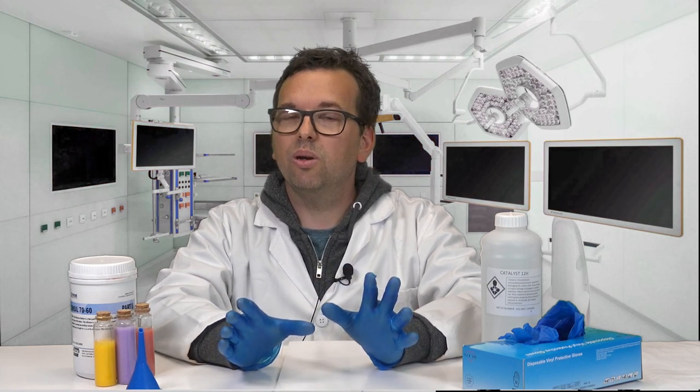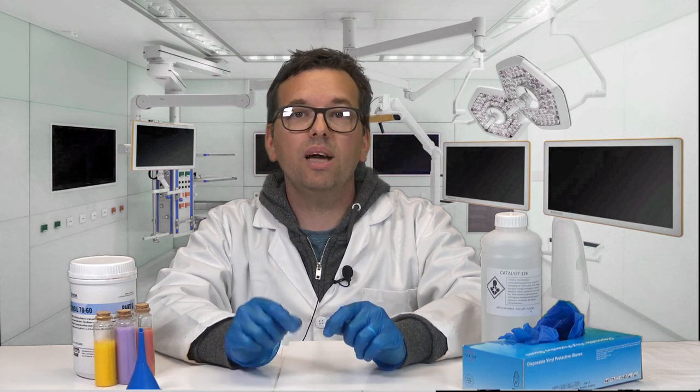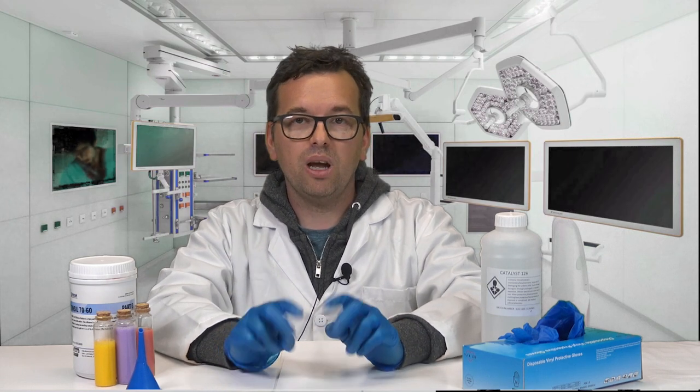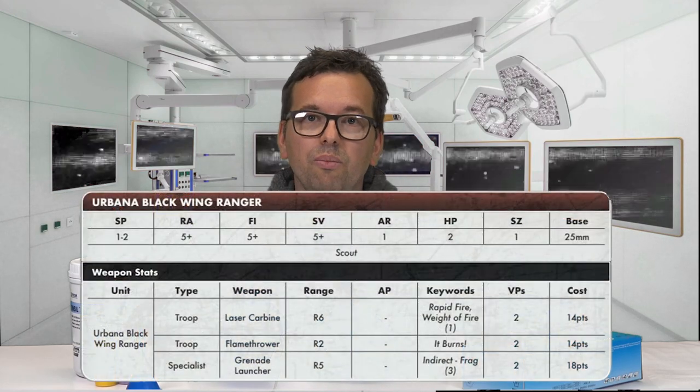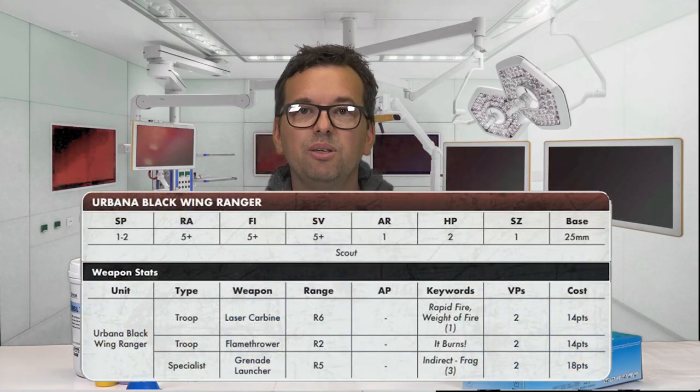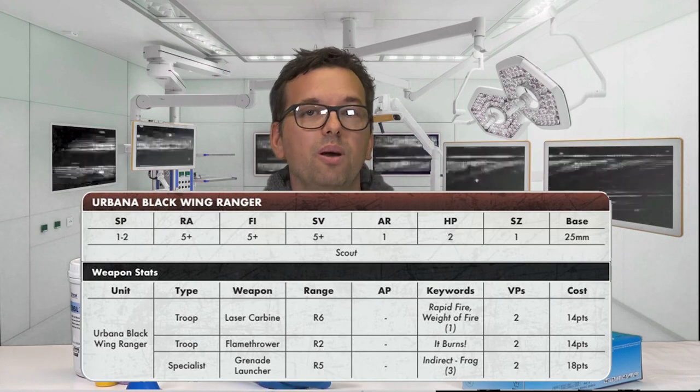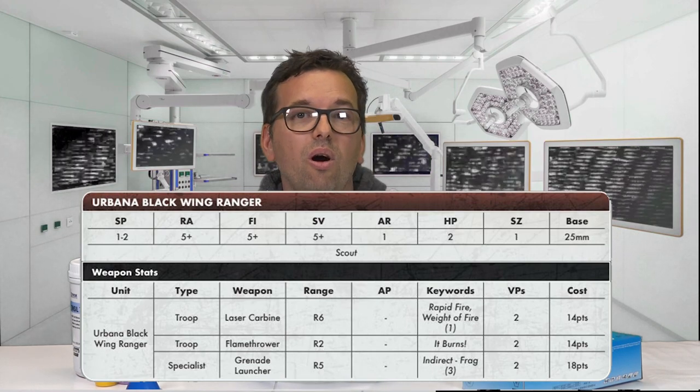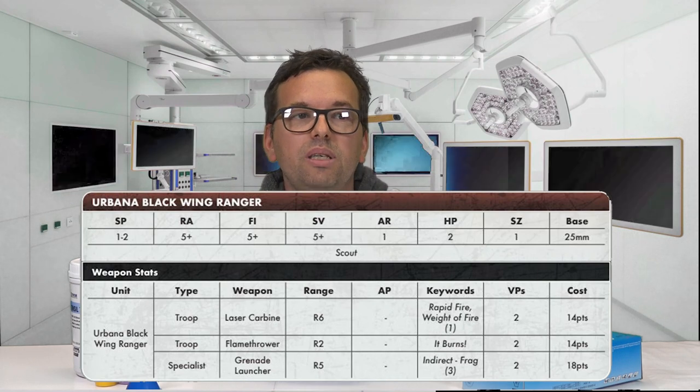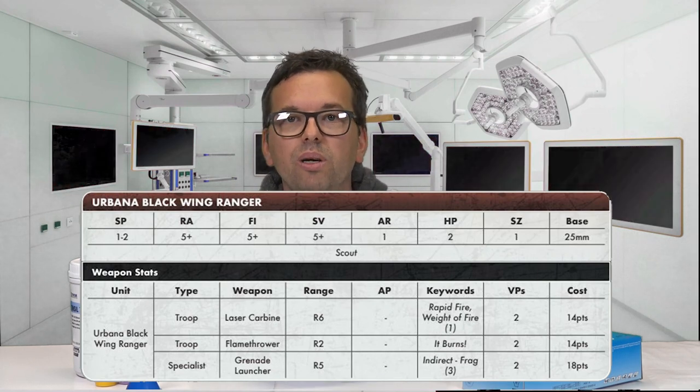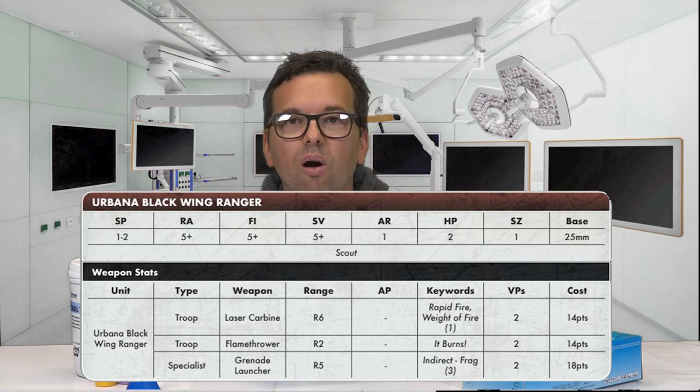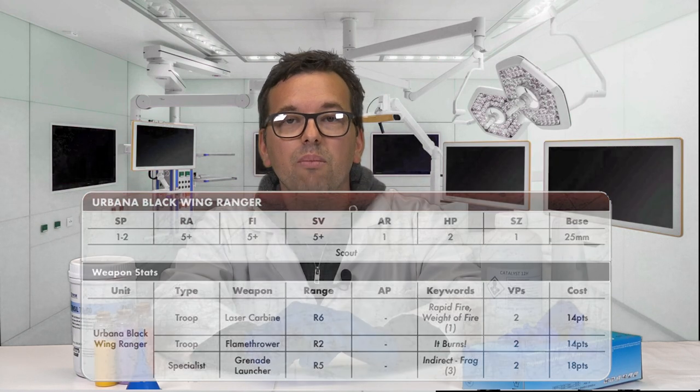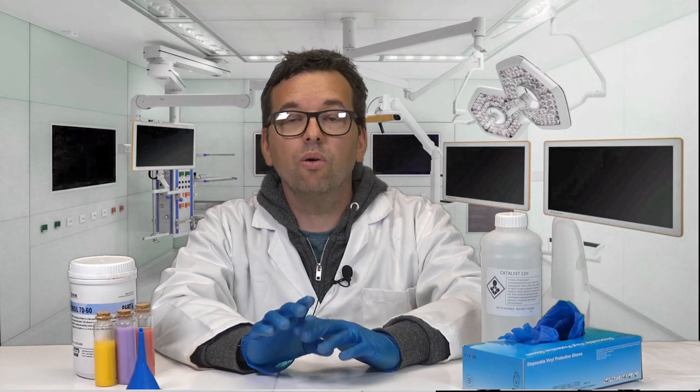I think one thing that may catch people unaware is Meson Labs are surprisingly fast too. The Rangers have scout, which means you can deploy them and then move them up slightly closer to your enemy. So you're putting pressure on the enemy from turn one, particularly when you've got things like the flamer which normally only has a range two, but if you can move up with a scout move you might be within range to start shooting as well.